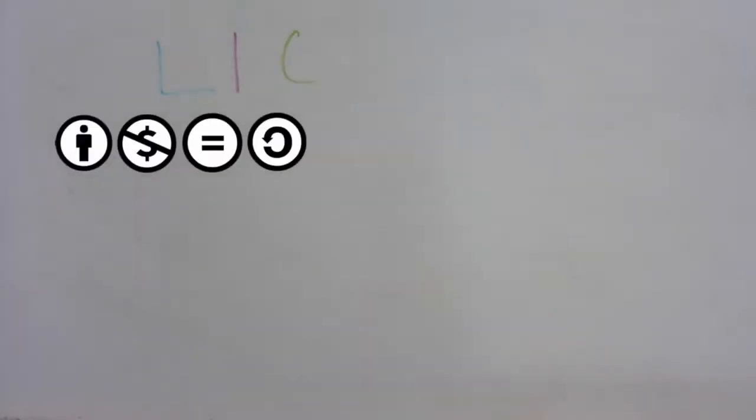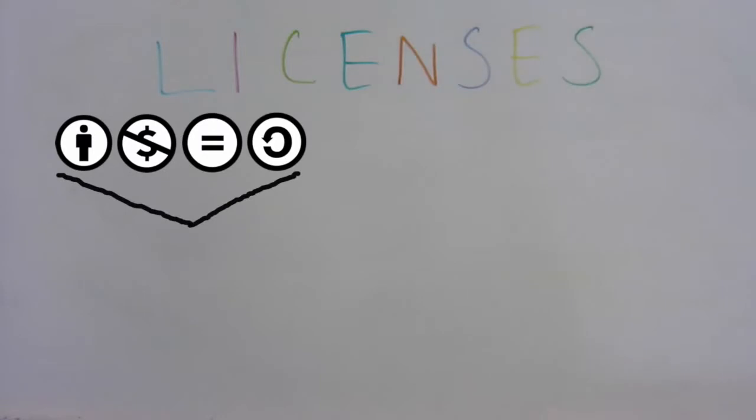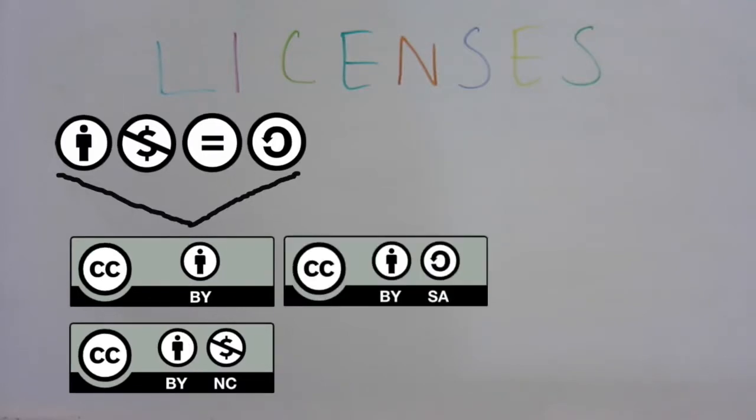The different elements combine to make certain combinations called licenses. A CC license is a combination of its elements, and labels exactly what you allow others to do with your work. Here are the six official CC licenses that have been made.